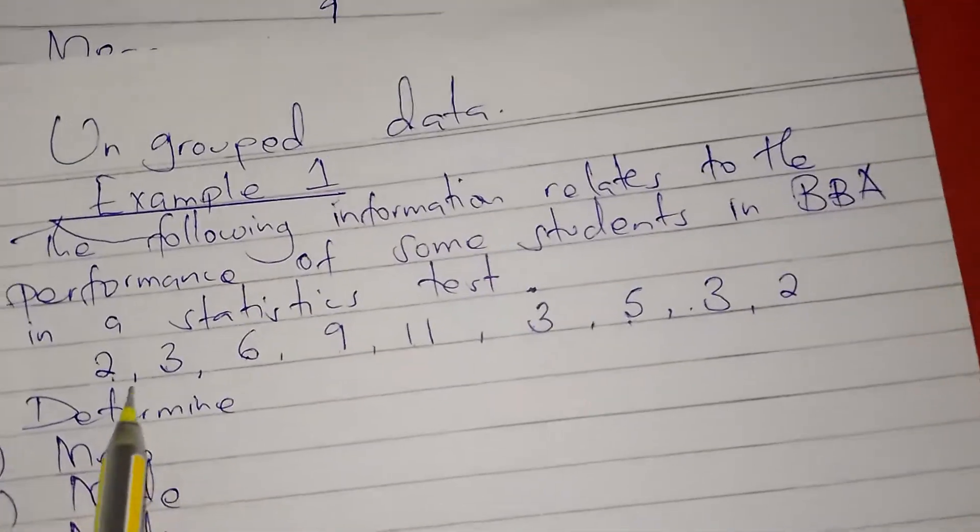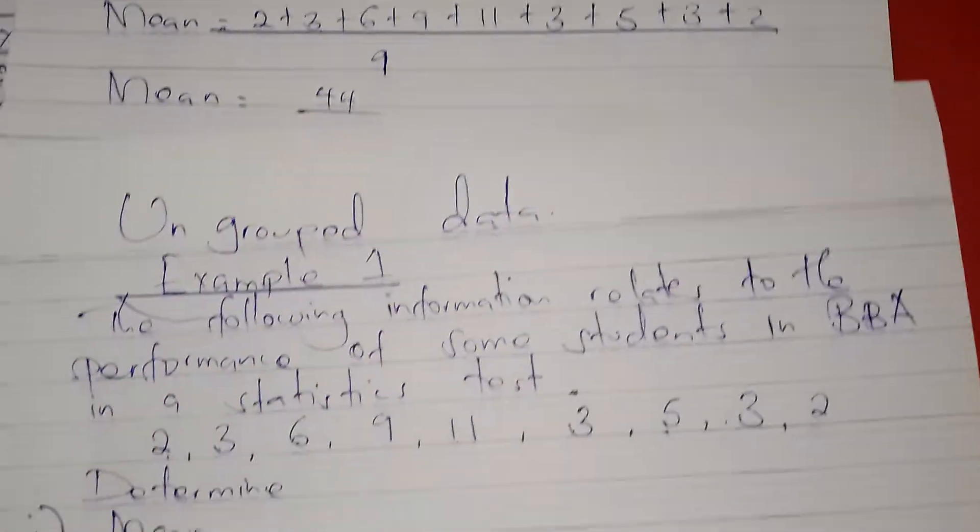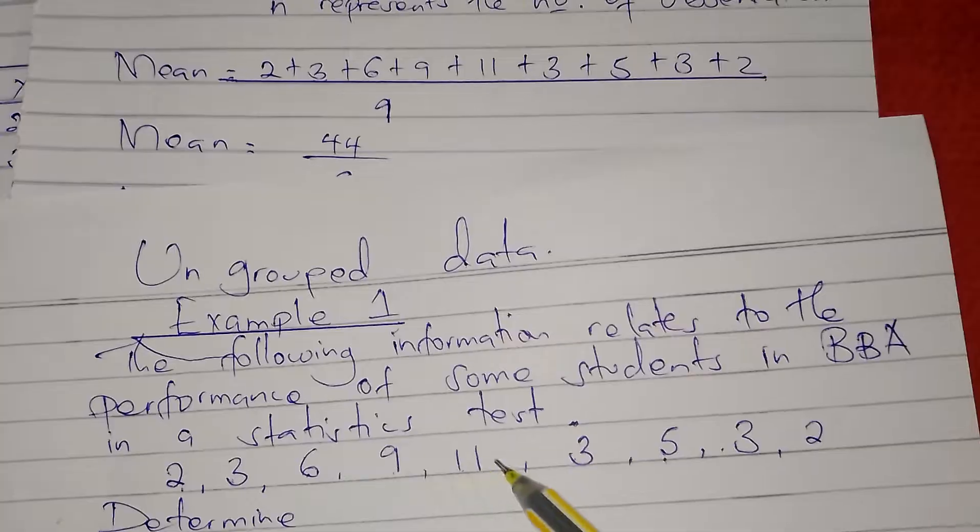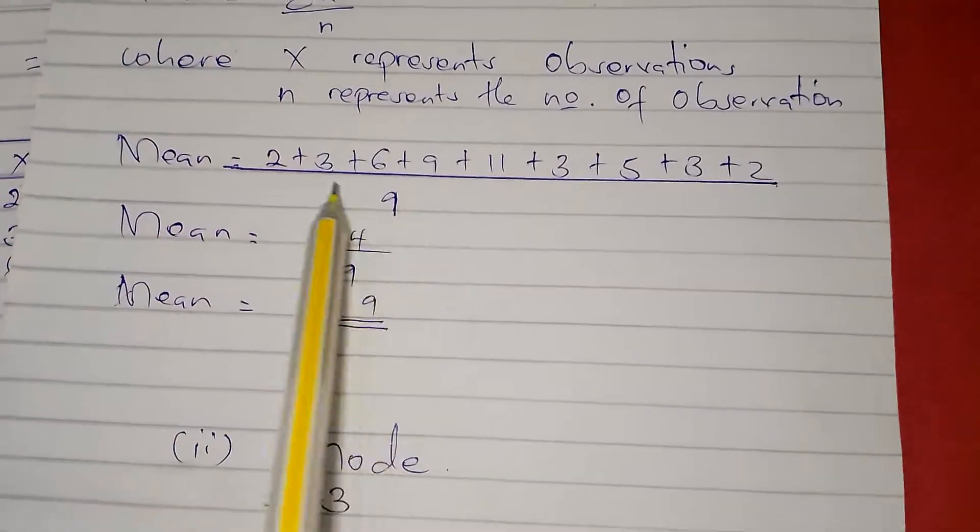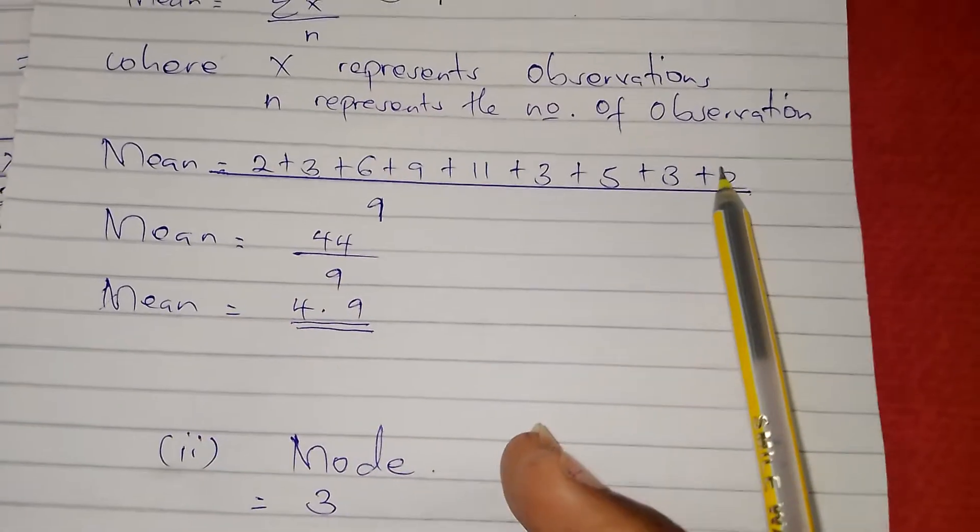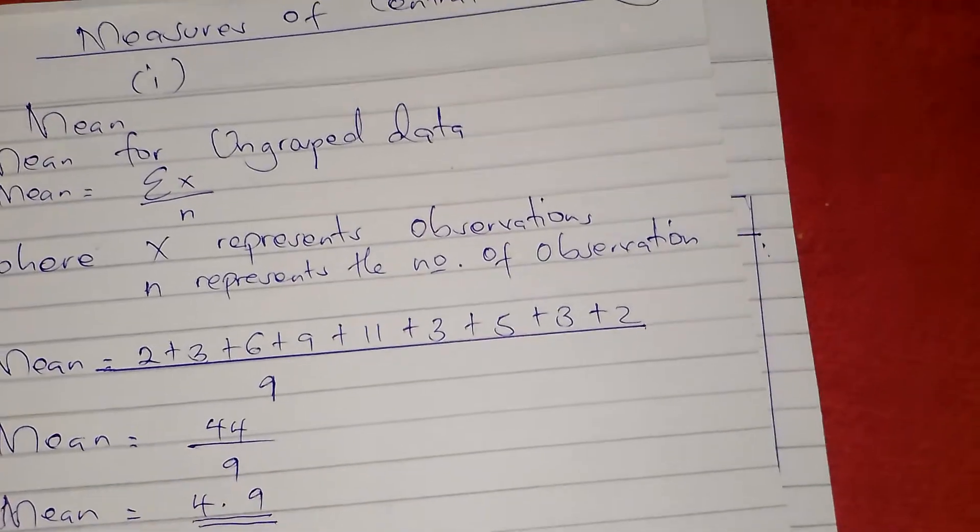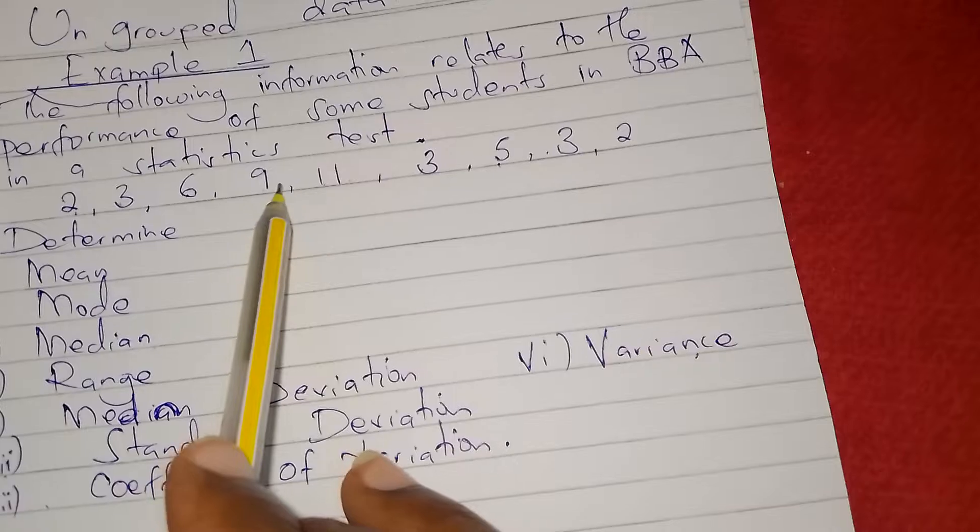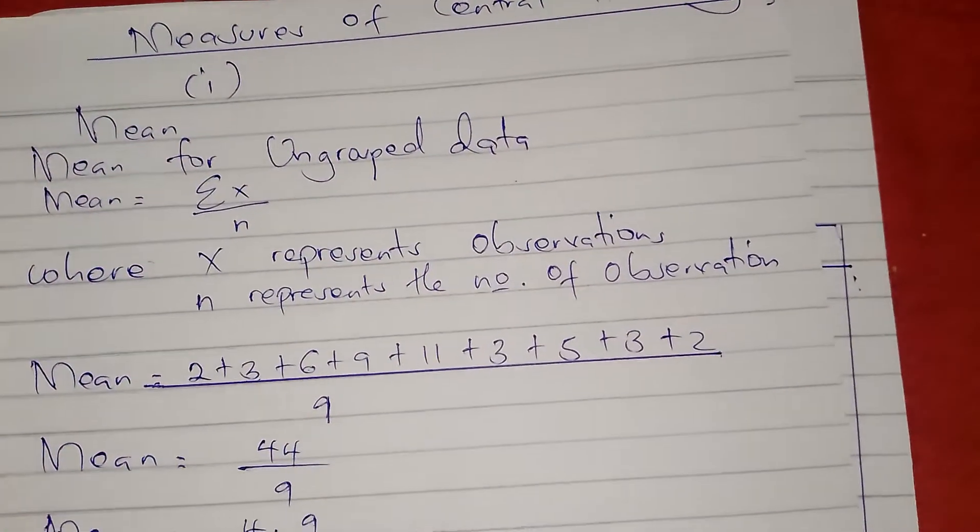So we shall get 2 plus 3 plus 6 plus 9 plus 11 plus 3 plus 5 plus 3 plus 2. These are what we take as our x. Then n is the number of observations. We count the observations: 1, 2, 3, 4, 5, 6, 7, 8, 9. So the observations are 9, therefore our n is 9.